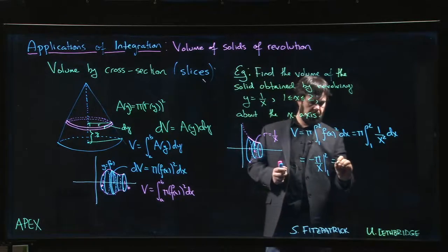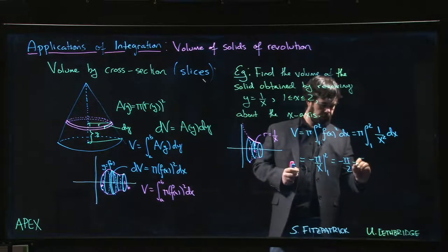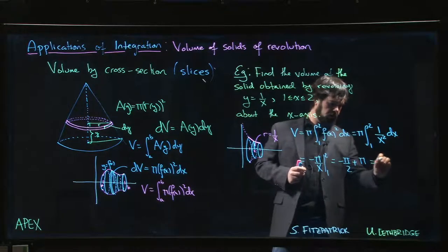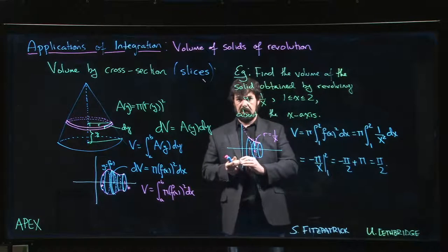So we get minus pi over 2 minus minus pi. So plus pi gives us an answer of pi over 2 for the integral.